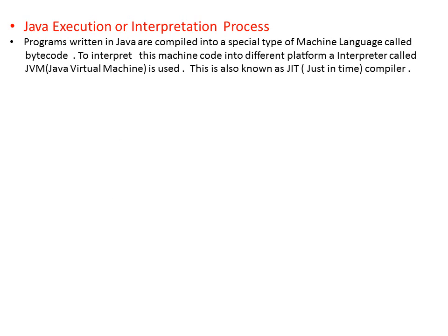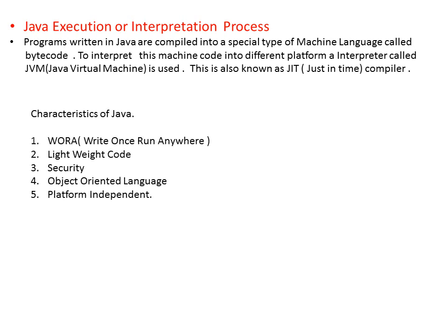Now let's see the various characteristics of Java. Once you have written the program, it does not require any kind of separate compilation — it can be executed in any other programming language environment. So you have to write once and it can be executed anywhere, on any kind of platform. It is also lightweight — as it generates bytecode, which takes very little space in memory. That's why it is known as lightweight code.